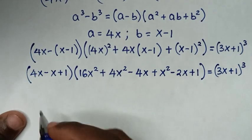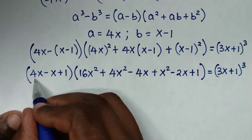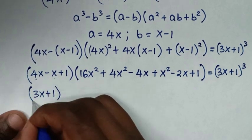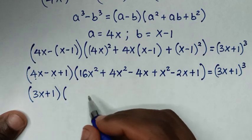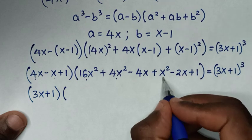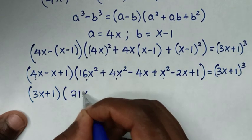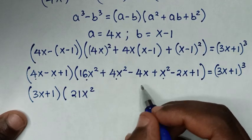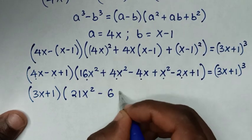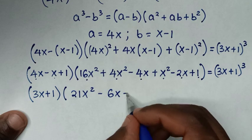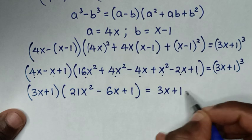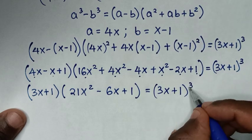In the next step, (4x minus x plus 1) simplifies to (3x+1). Collecting terms inside the second bracket: 16x² + 4x² + x² gives 21x², and minus 4x minus 2x gives minus 6x, plus 1. So we have (3x+1)(21x² minus 6x plus 1) equals (3x+1)³.